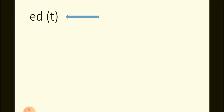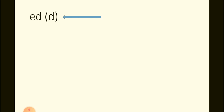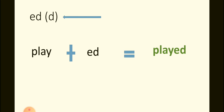When you write -ed, it can sound different. Example: pick plus -ed. Remember, picked — you can hear a 't' sound. Pick plus -ed, that is picked. It is not a 'd' sound, it is a 't' sound. Now the 'd' sound: -ed sounds like 'd' here. Play plus -ed — played. Played.